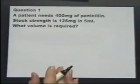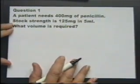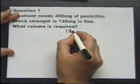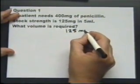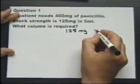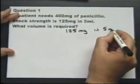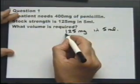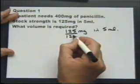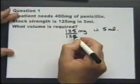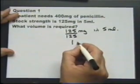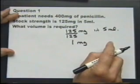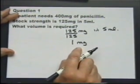The patient needs 400 milligrams of penicillin, and the strength of the medicine is 125 milligrams found in five millilitres. If we divide by 125 — 125 divided by 125 is one — we'll be working out how much medicine is needed to get one milligram of penicillin.